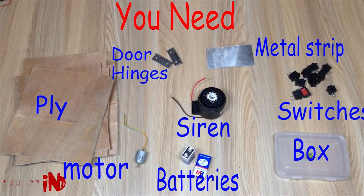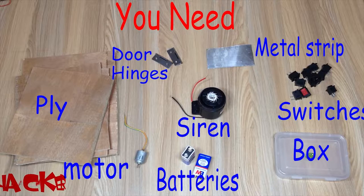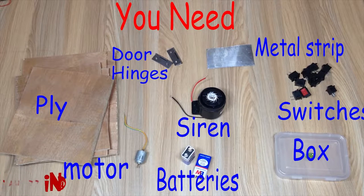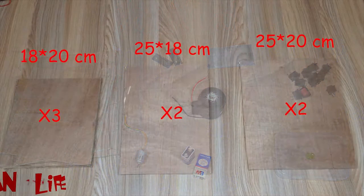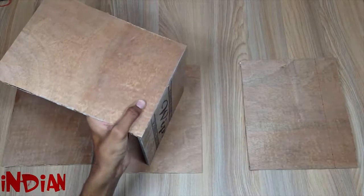For making these you need the door rings, ply, metal strip, switches, box, batteries, motor, and siren. First of all we are making the outer body.